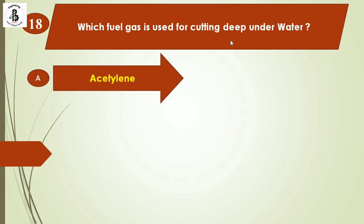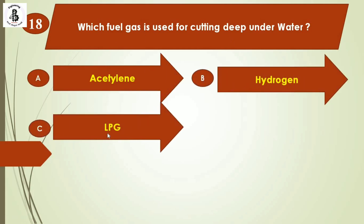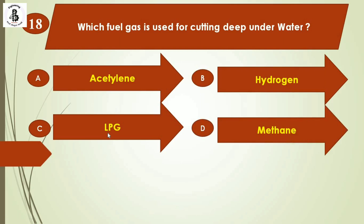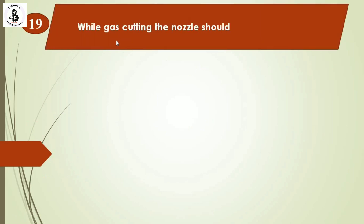Question 17: Which fuel gas is used for cutting deep underwater? Option A: acetylene, option B: hydrogen, option C: LPG, option D: methane. Acetylene gas is used for cutting deep underwater. The right answer is option A: acetylene.